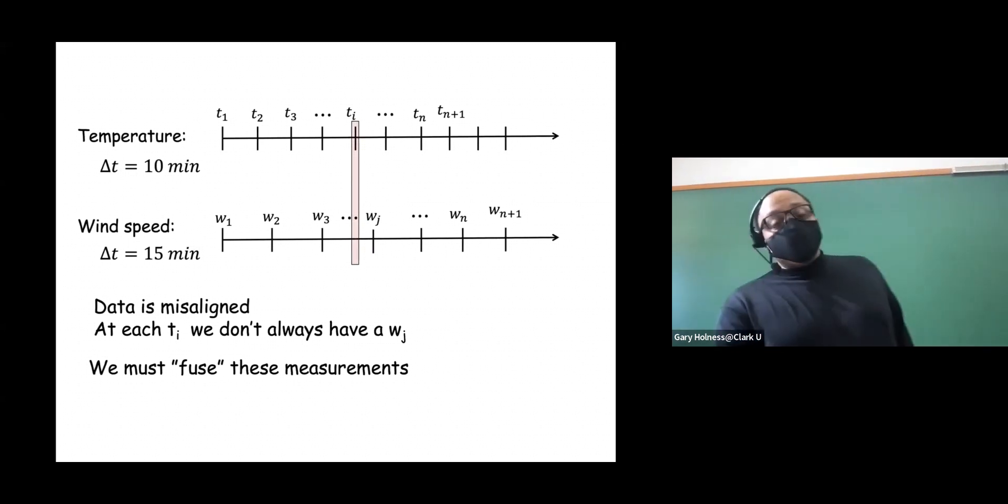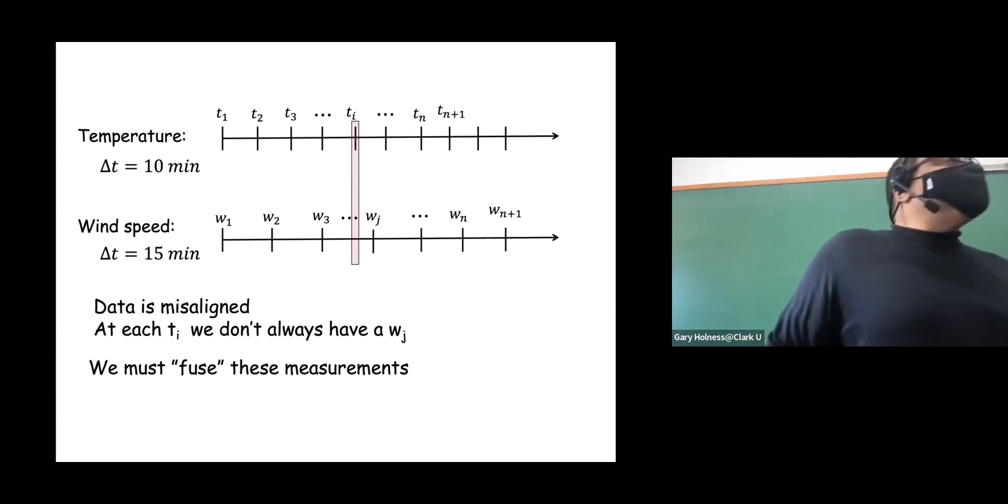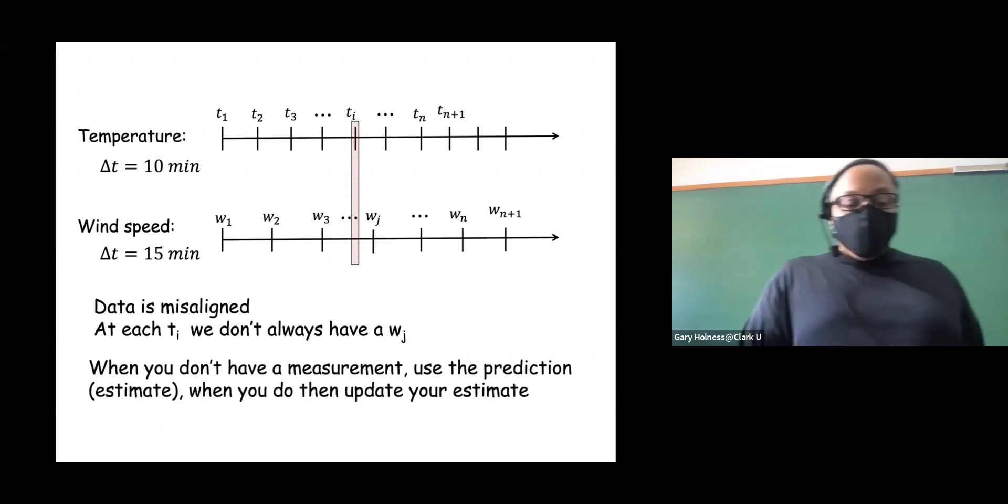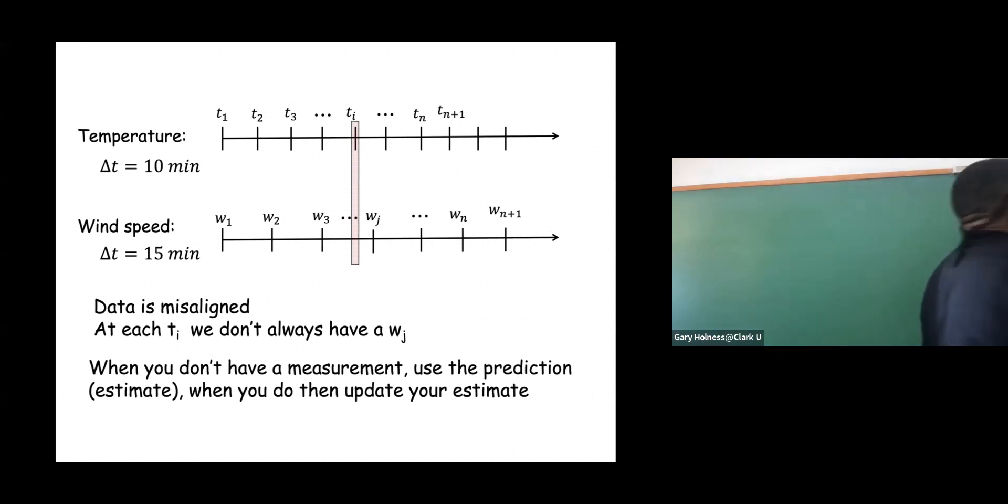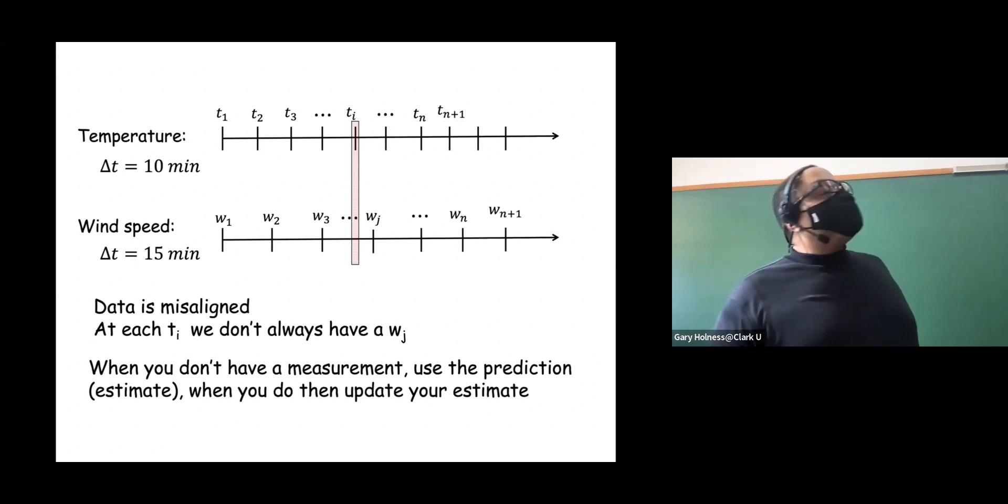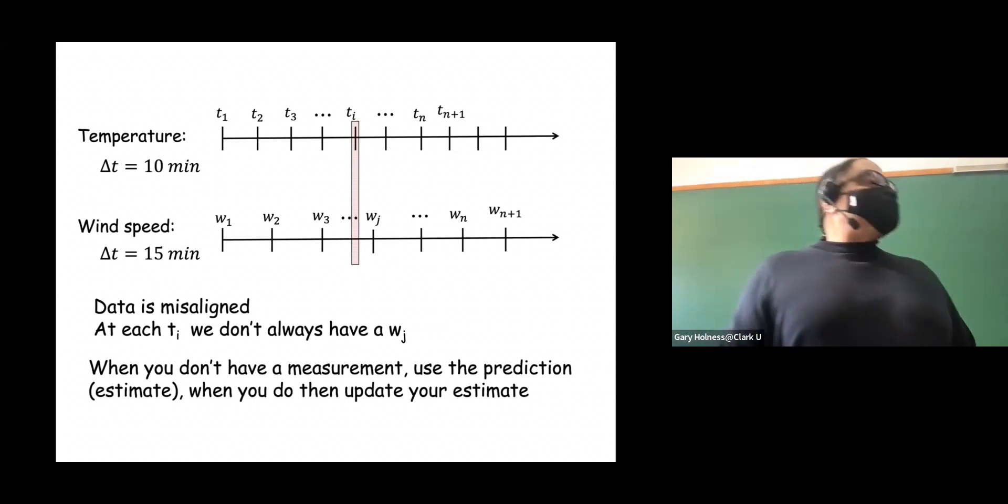There's something called a Kalman filter or a Gaussian process, which is a really important construct in data science, especially because it allows you to fill in missing data in a very principled fashion. We'll be talking about that towards the end of the semester. This idea of time is really important. We can use time and we can use modeling assumptions to effectively fuse together data or when we don't have data available at specific moments in time when we need to create a vector instantiation in order to do analysis.